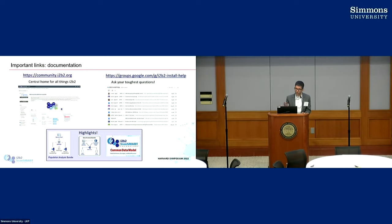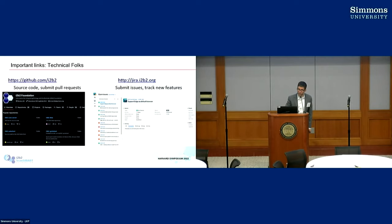Some of the things there include bundled documentation and data model documentation. Definitely check out those two resources. If you're a developer, also check out our GitHub at github.com/i2b2 — that is the source code. You can download the software itself from the main page. There's also a JIRA where you can submit issues if you have a feature request or something's wrong with I2b2.